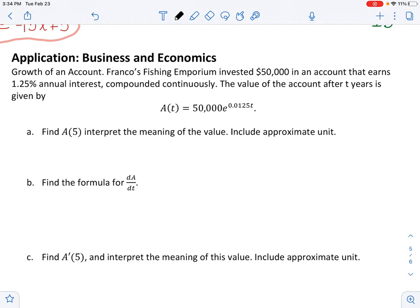A of 5 is going to be the value of the account after five years, because that's what A of T is. So if I plug in 5 into the function, Franco's fishing emporium, can I just call him Franco? Franco should have more money. 50,000 times e to the 0.0125 times 5. You guys will need a scientific calculator to do this. And they said put appropriate unit, and the unit is just in dollars, right?